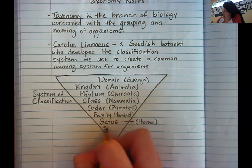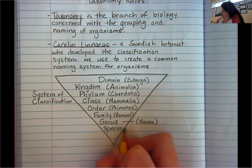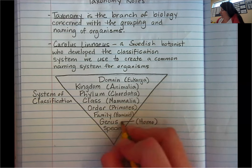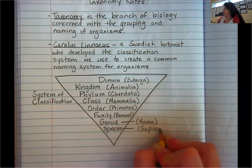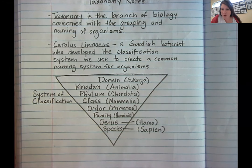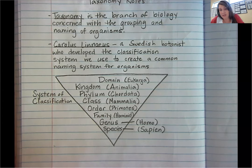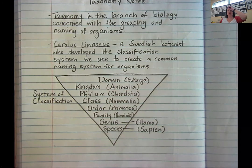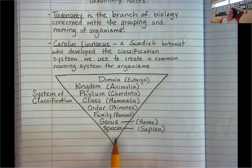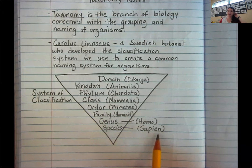You probably guessed it — the next one is Species. Ours is sapiens. We are Homo sapiens — you've probably heard that before. There are also things called subspecies. Think about dogs: there are tons of subspecies of dogs, but they're all part of the same genus and species — I think it's Canis familiaris. Within that, they have many subspecies. Humans, not so much, but Homo sapiens you've probably heard.